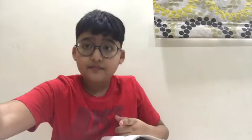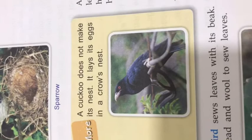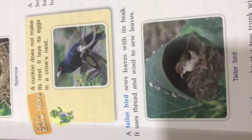Now we come to nests. A cuckoo does not make its own nest — it lays its egg in a crow's nest. The tailor bird uses its beak and thread and wool to sew leaves together to make its nest. See this picture — amazing!